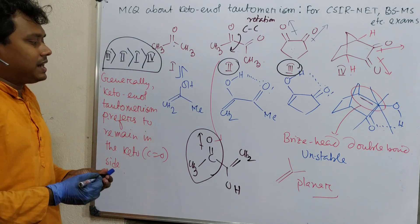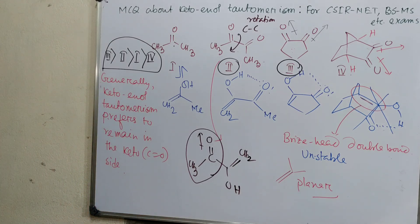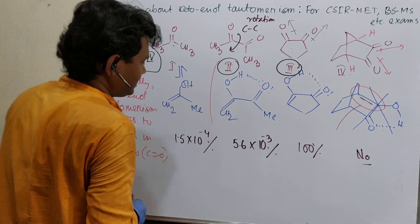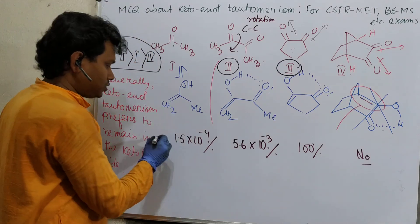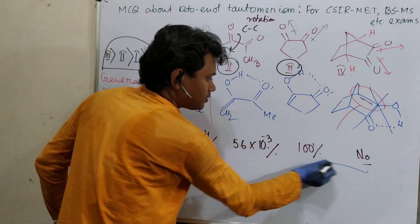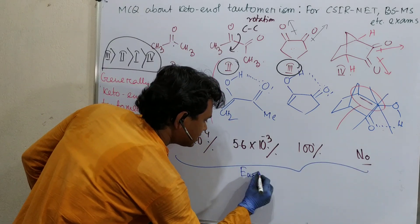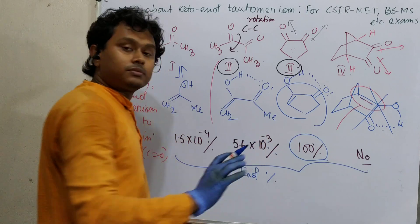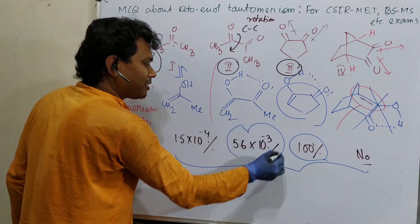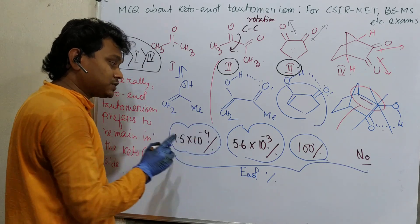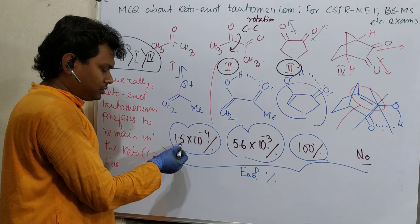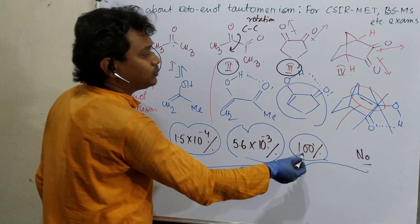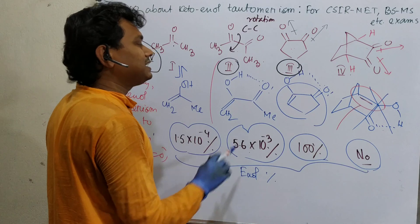Now as I told, I will provide particular data about the enol content. Look at this data - this is the percentage of enol. This compound 3 remains completely in enol form, 100%. Compound 2 is 5.6×10^-3, and compound 1 is 1.5×10^-4. Just think - around 40 times more enol content for compound 2. And compound 4 is no enol conversion. This data supports the logic.